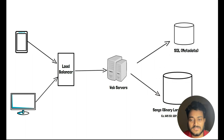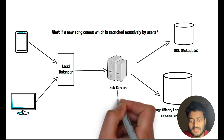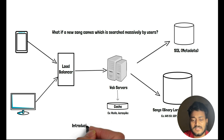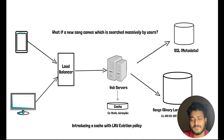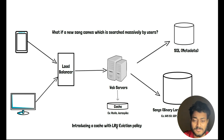For the metadata — the data we discussed previously — we can store that in an SQL DB. Whatever new songs come in that are massively searched by users, we can introduce a small cache with a least recently used eviction policy, so that the most heavily used songs stay in the cache. That way, web servers do not need to search for those songs in the large object storage or the SQL database — they can fetch this information from the cache. For this cache, you can use anything such as Redis, Aerospike, or any other cache.